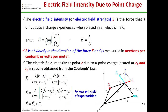Now I will discuss the application of Coulomb's law — specifically, finding the electric field intensity due to a point charge. The electric field intensity (or electric field strength) is defined as the force that a unit positive charge experiences when placed in an electric field. Mathematically, E = lim(Q→0) F/Q, meaning the force experienced per unit charge. E is in the direction of force F and is measured in Newtons per Coulomb or volts per meter.